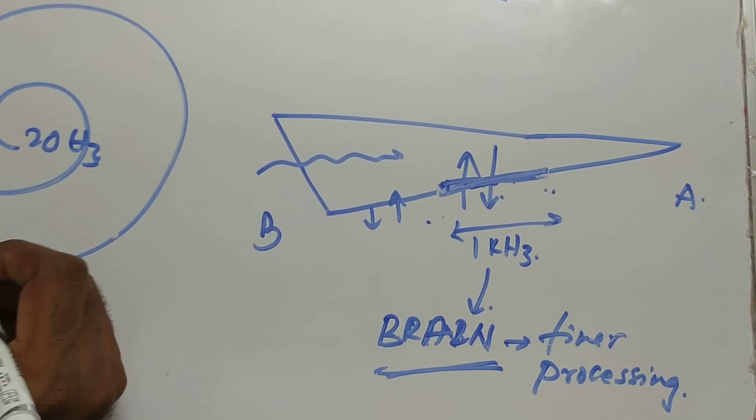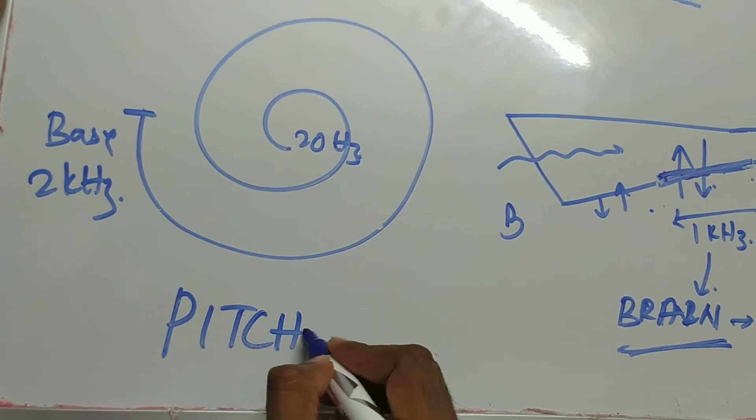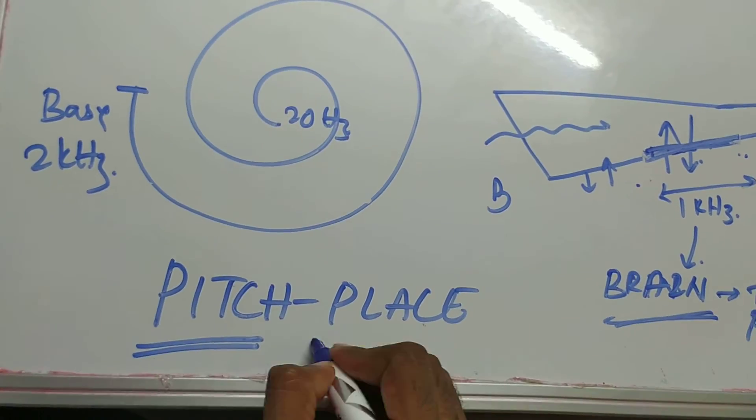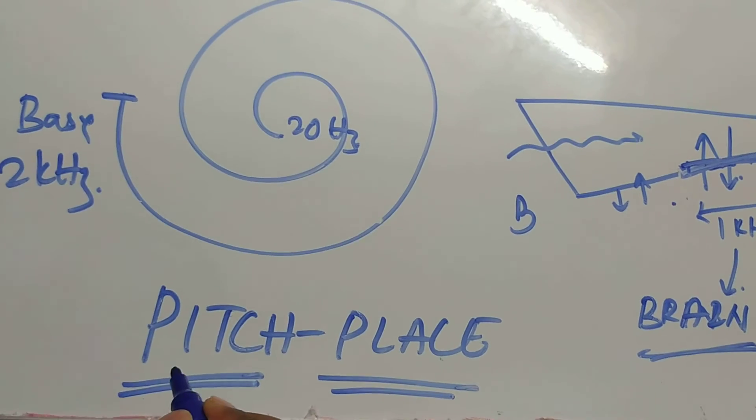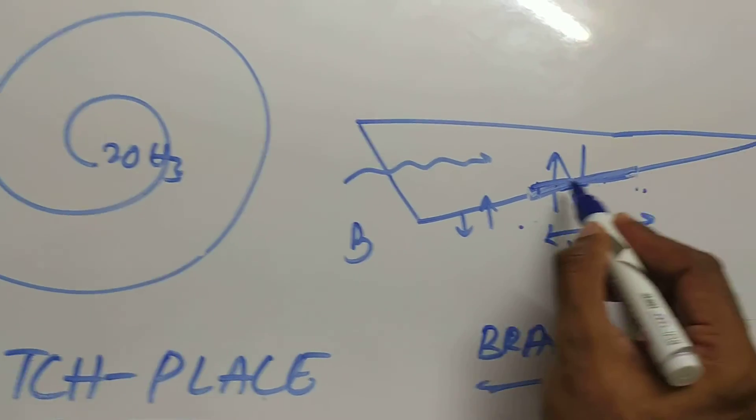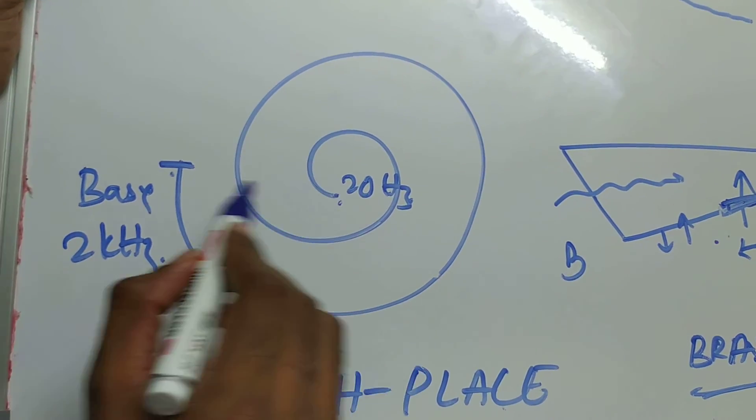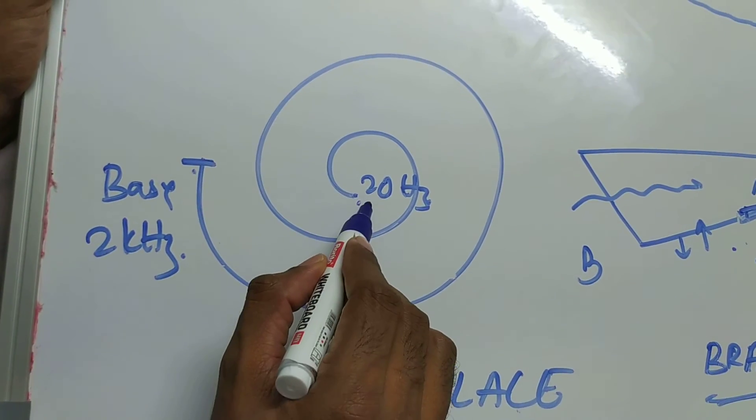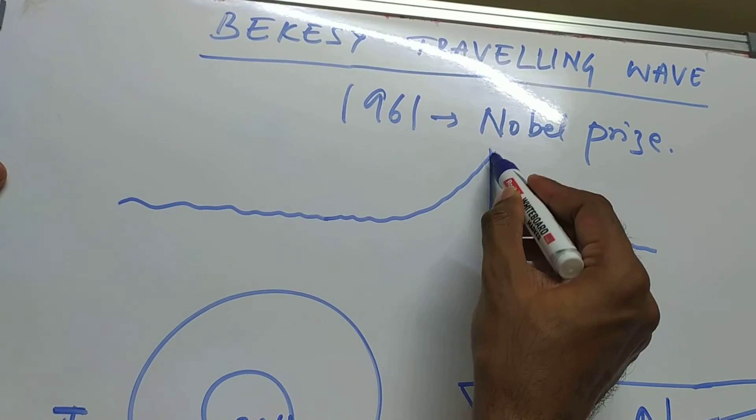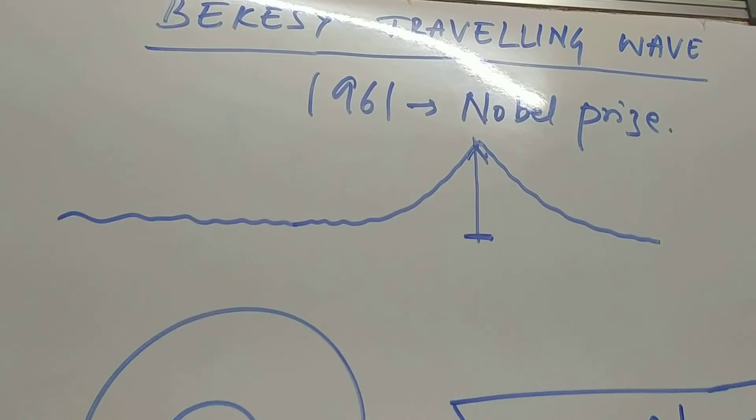This is also called the pitch-place theory. For every pitch there is a place—pitch is frequency, so for every frequency in the cochlea there is a place. This is tonotopic representation from base to apex: base for higher frequencies, apex for lower frequencies. The traveling wave reaches a peak at one point representative of that frequency. This is the most widely accepted Bekesy's traveling wave theory.